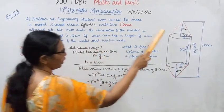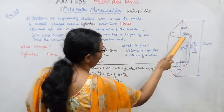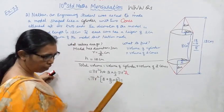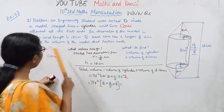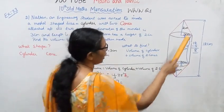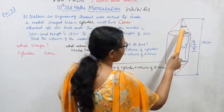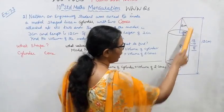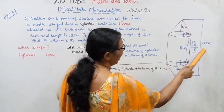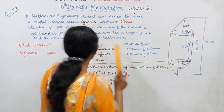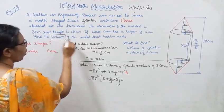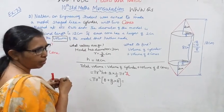The diameter of the model is 3 cm. What are they giving us? Radius. Diameter is 3 cm. Length — the full length of the model, from top to bottom, is the height of the cylinder. Height is 12 cm. What do we need to find? Find the volume of the model that Nadan made.